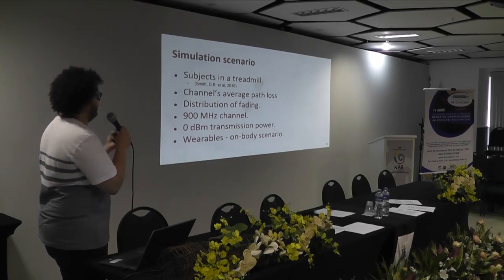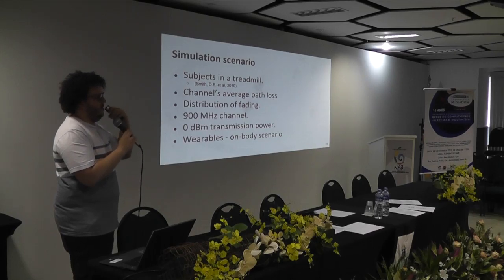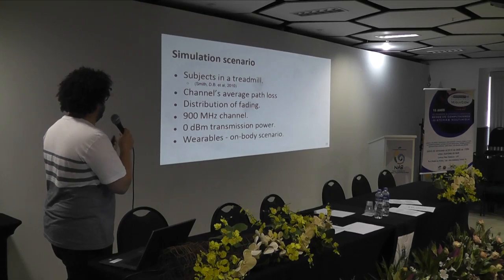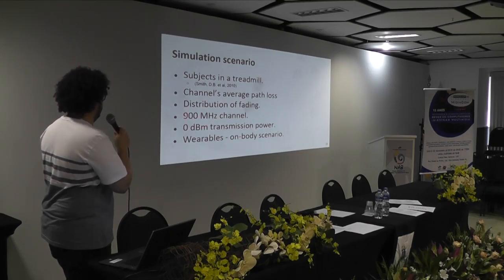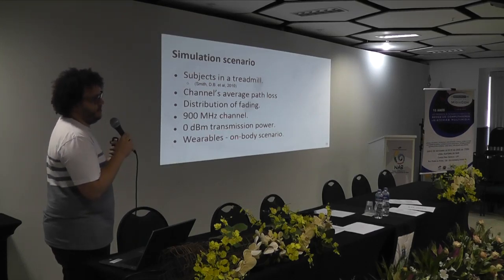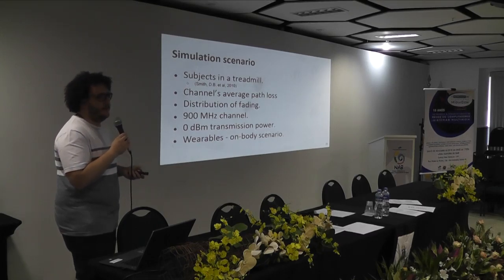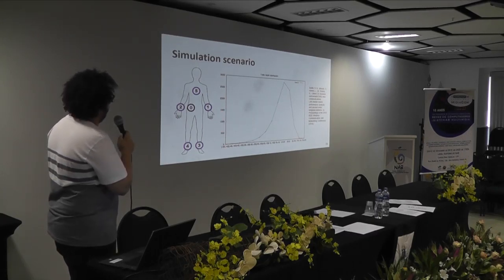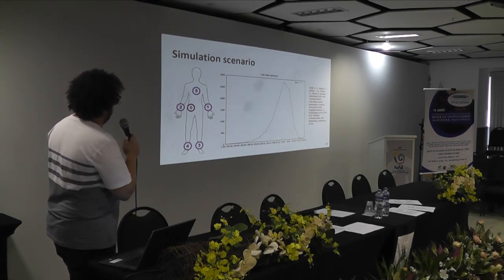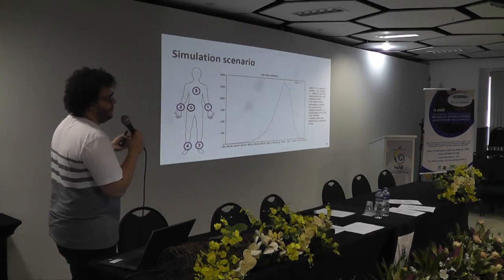The channel data was collected from subjects walking in a draft field. They put into the simulator the channel's average path loss and the distribution of fading in this scenario for each link. The channel is a 900 MHz channel. The transmission power was kept as low as possible for the device, at 0 dBm. These were wearable devices, not implantable around the body. Here we can see the nodes deployed — Node 0 is the hub, and the other 5 nodes are sensors. The fade distribution has a long tail and can have high peaks of losses in really bad wireless channel conditions.